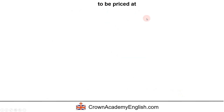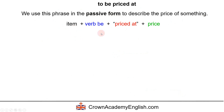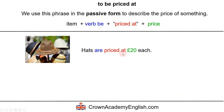To be priced at. We use this phrase in the passive voice to describe the price of something. The form is: the item, followed by the verb be, priced at, and then the price. For example: hats are priced at 20 pounds each. This is another way of saying hats cost 20 pounds, or the price of the hats is 20 pounds.